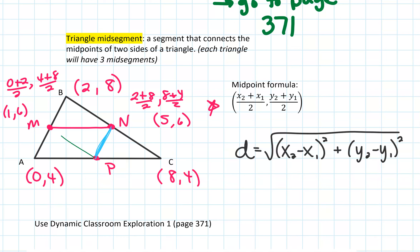Connecting those midpoints does make another triangle inside the original. What we're going to talk about is how each mid-segment relates to the other side of the triangle. Since P is the midpoint of AC, we know that AP and PC are congruent. Since we're dealing with midpoints, we always have two congruent parts on either side of that midpoint.